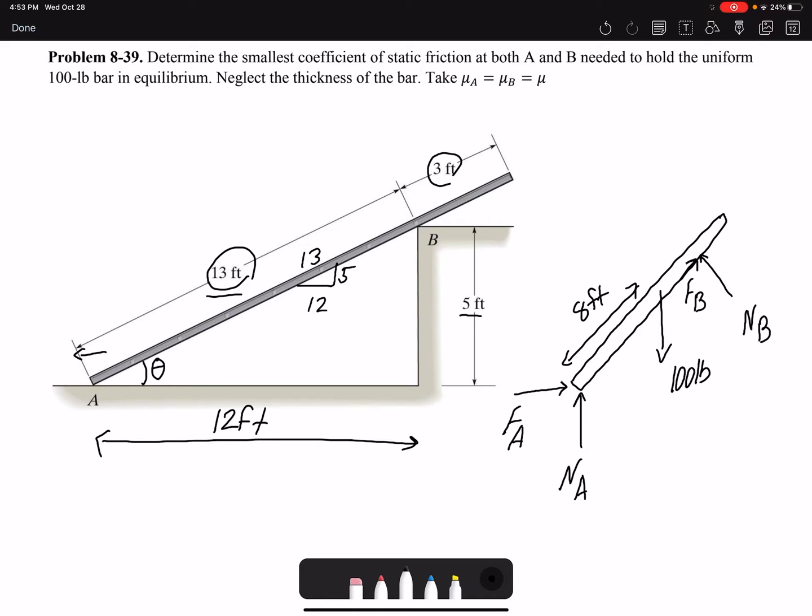For the case of N_B, if I draw it bigger here, because it's perpendicular, so my triangle would be 12, 5, 13. So that would be N_B. And then F_B is along the same line, so F_B is 12, 5, 13.